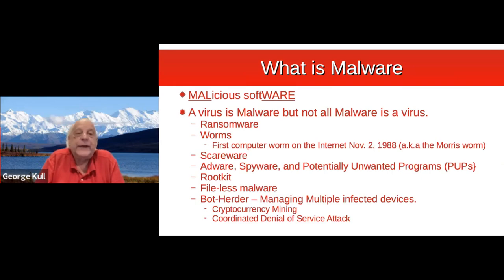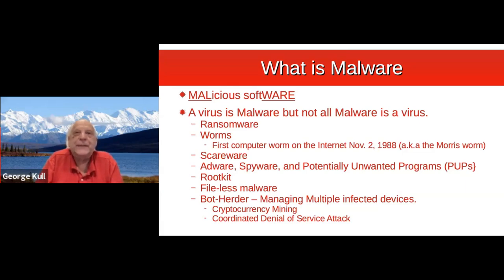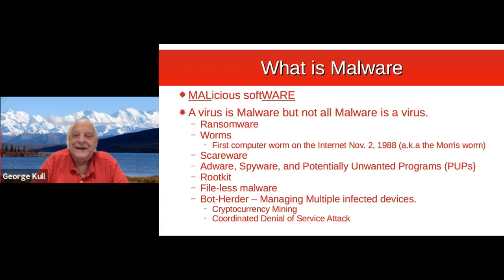Ransomware, where they go in and encrypt your data. Worms, which go out and reproduce throughout the network. The first computer worm hit the internet on November 2nd, 1988 — the Morris worm. Robert Morris was developing it as a proof of concept and it got out of his lab. He's also the first person to be prosecuted and convicted of a federal crime for doing that.